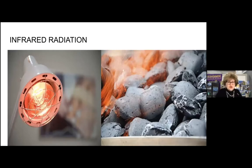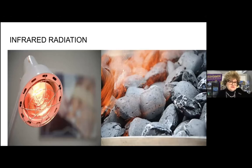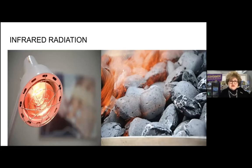Here are two types of heat transfer you're familiar with. The picture on the left is a heat lamp — sometimes used for heat treatment for bronchitis, and also to keep already-cooked food warm. On the right are charcoal briquettes. After the fire dies down, those charcoal briquettes emit a lot of infrared heat. They won't be emitting any light, just heat energy.